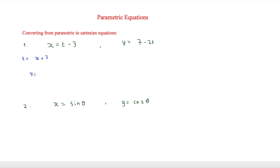Now we substitute t equals x plus 3 into y equals 7 minus 2t, giving y equals 7 minus 2(x plus 3). This has no t's in it, so it is technically a Cartesian equation, but we simplify it further: y equals 7 minus 2x minus 6, which gives y equals minus 2x plus 1. That is our Cartesian equation derived from these parametric equations.